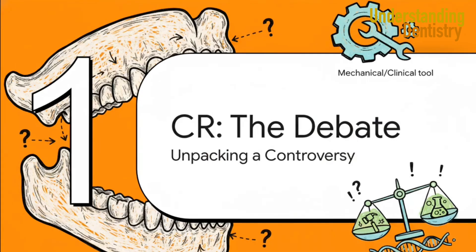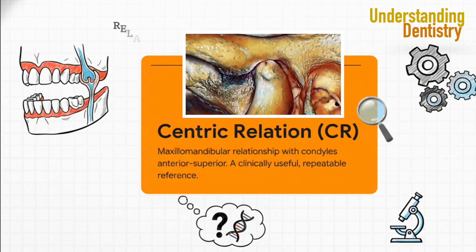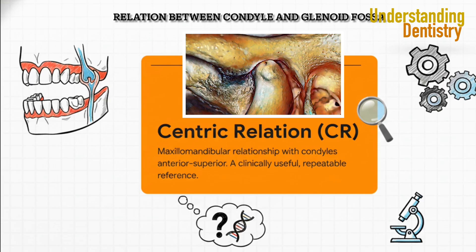Let's start at the very beginning. To really get a handle on this controversy, we first have to be crystal clear on what we're even talking about. Because, believe it or not, the definition itself is right at the heart of this whole debate. The current official definition from the Glossary of Prosthodontic Terms describes CR as a very specific relationship between the jaw and the skull. The key here is that it's defined independently of any tooth contact. This is what's supposed to make it such a reliable, repeatable reference point for clinicians.